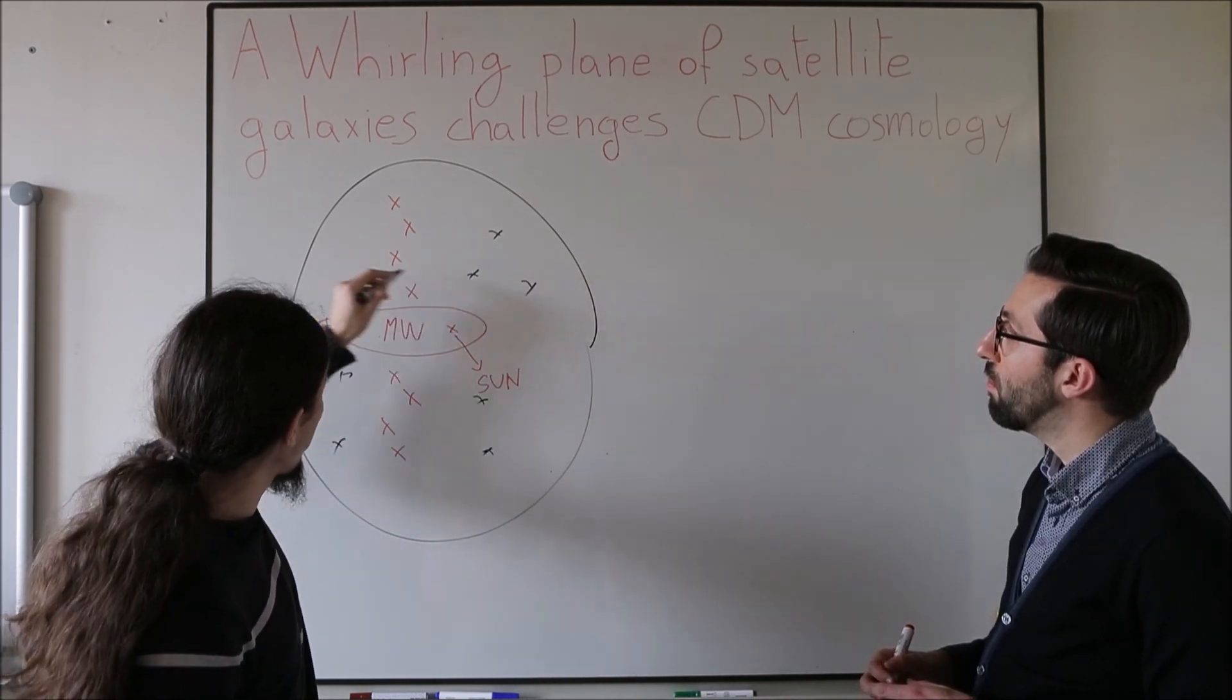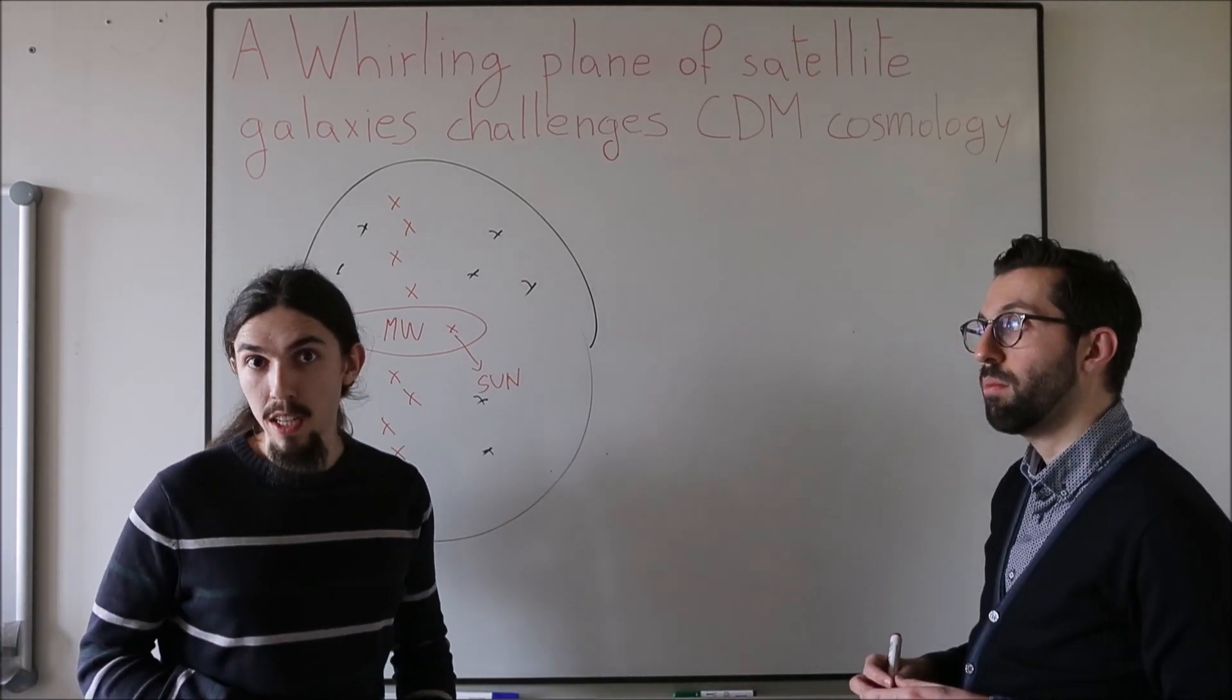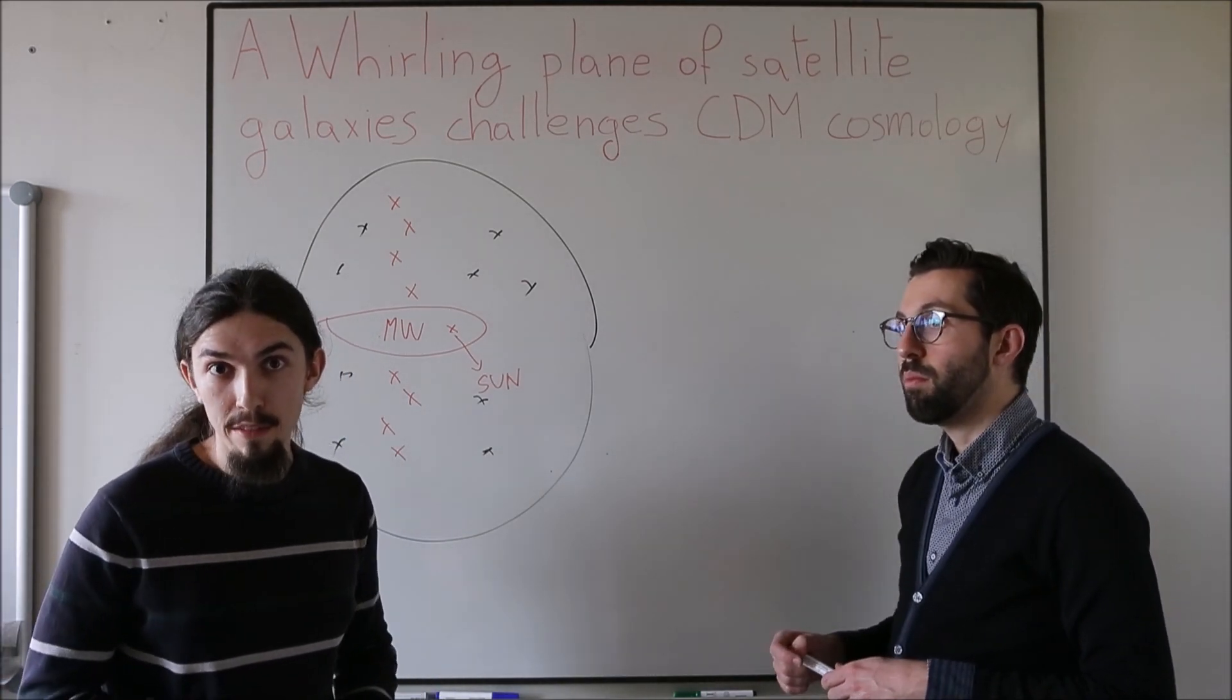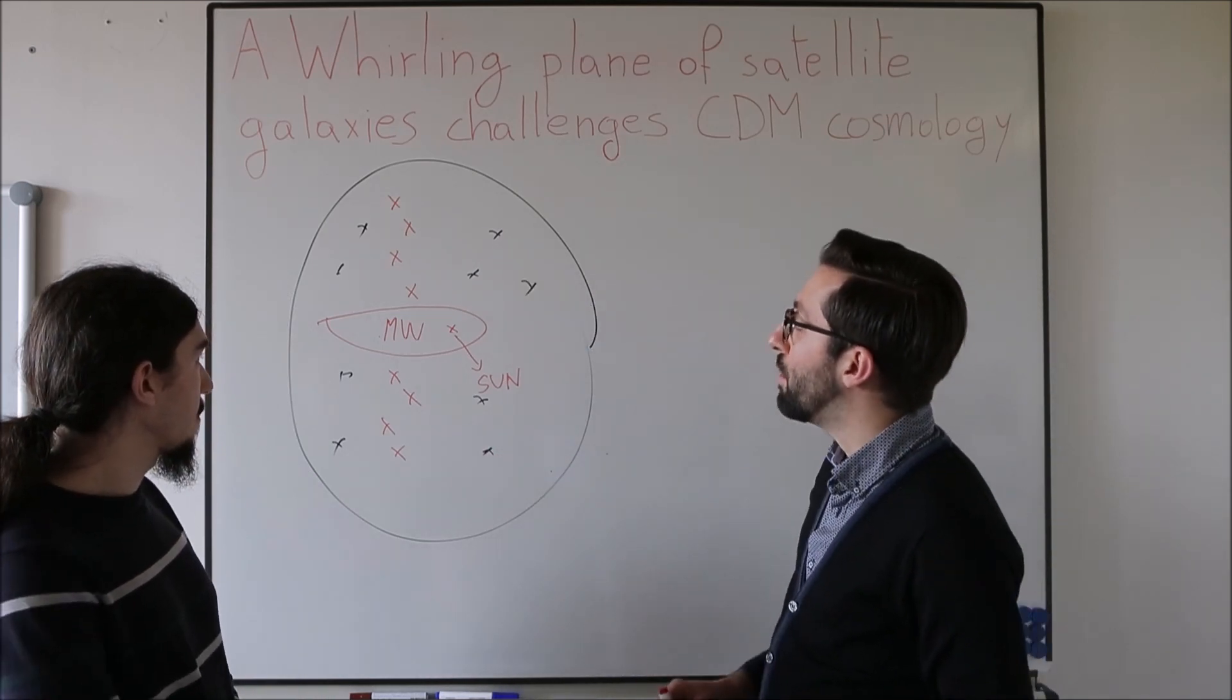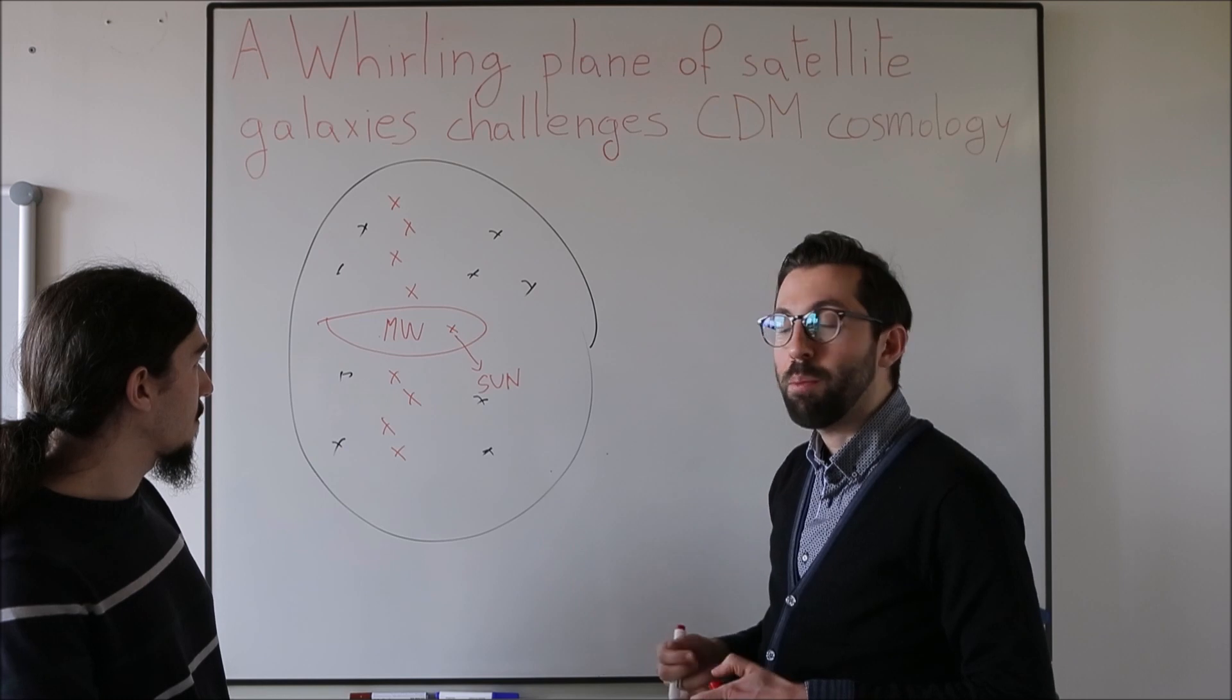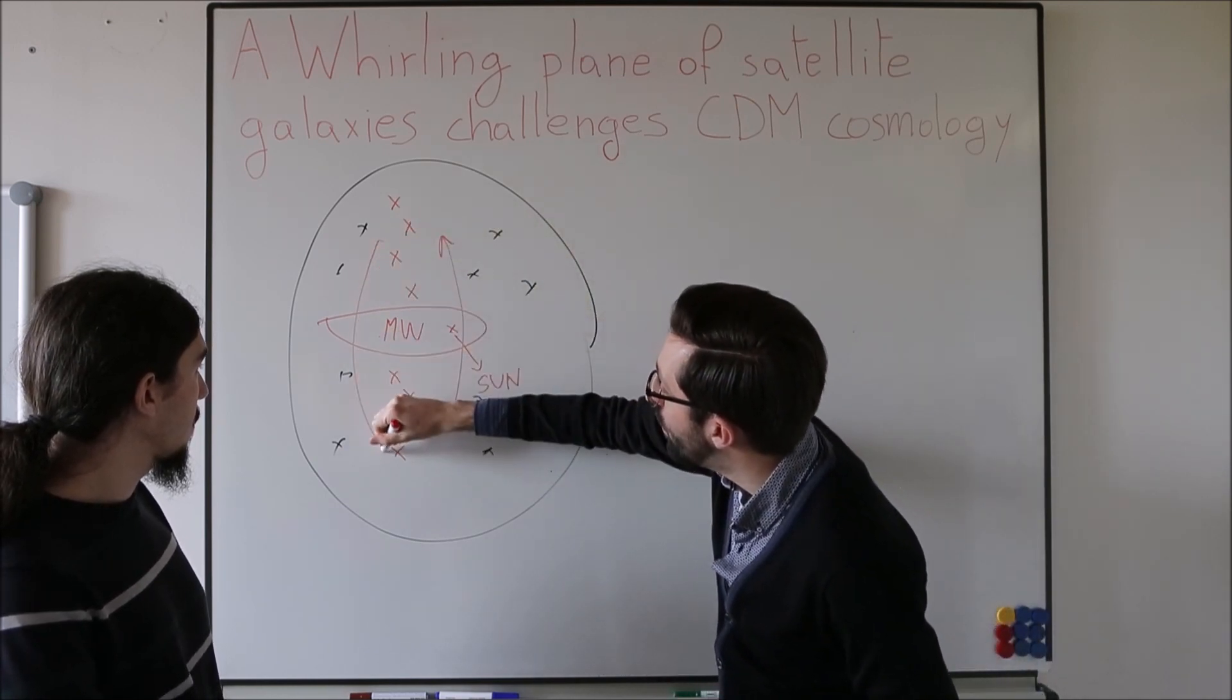Satellite galaxies should be distributed randomly around the Milky Way. And also, the motions of the satellites should be quite chaotic, like bees around the beehive. On the other hand, you see that the dwarves around the Milky Way are aligned in a planar structure and they also seem to rotate within this plane.